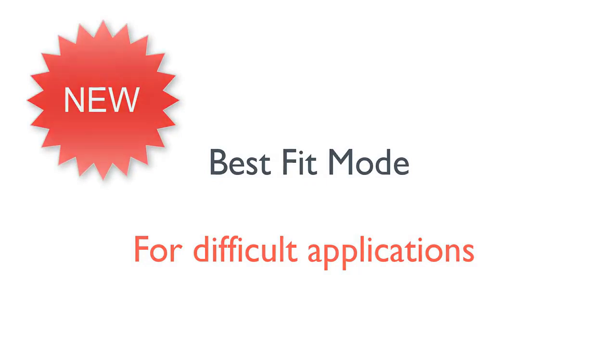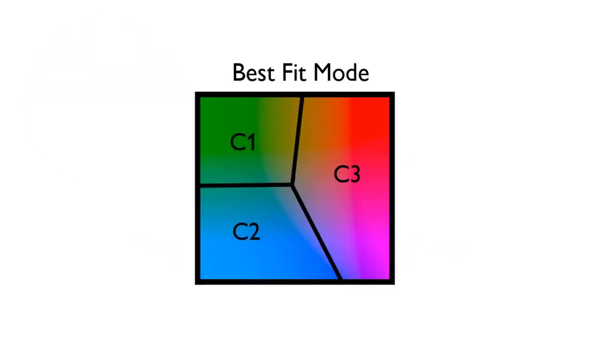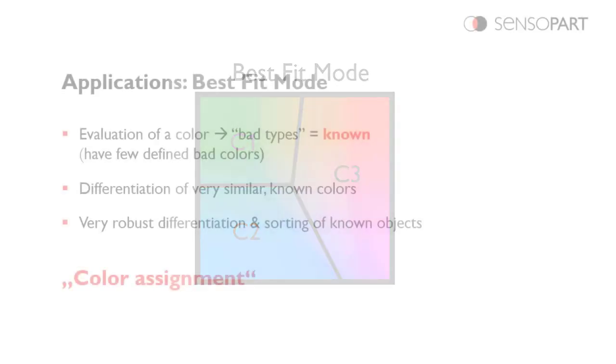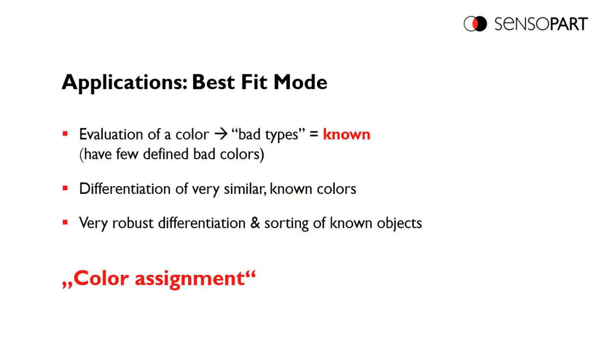Best fit mode is for difficult applications. For example, if you have very close colors, it'll pick the closest one. Here again, we have the color space with three taught colors. If each taught color is in the middle of the C, anything within this space, for example, in the upper left corner around C1, any of those colors, including part of the yellow, will be classified as color one.